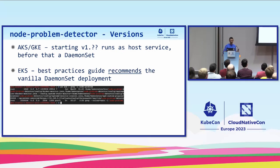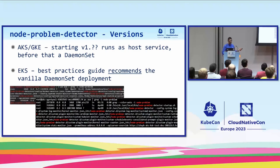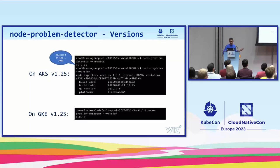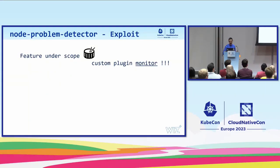There's a component in your AKS/GKE cluster that acts at the Kubernetes level — it executes into pods — and at the same time runs as a host service, as a root process, and it runs periodically. In terms of versioning, the latest version is V0.8.12 or 0.8.13, and we can see that AKS and GKE V1.25 are running 0.8.10, which is about one and a half years old — not ideal.